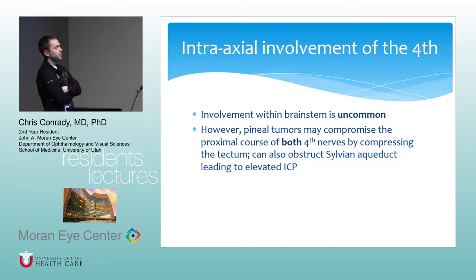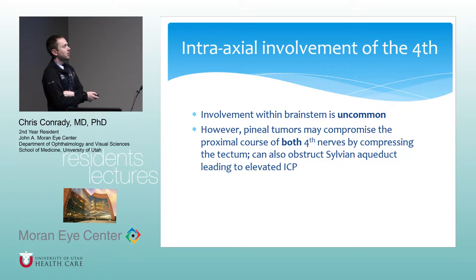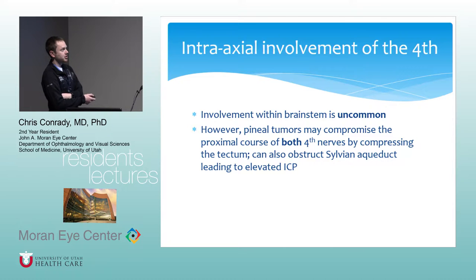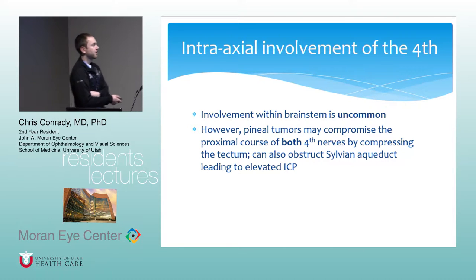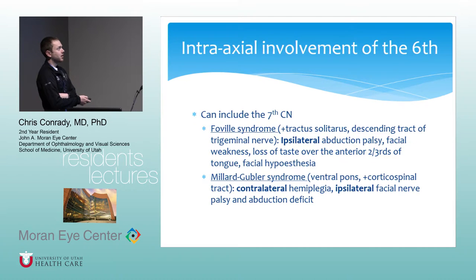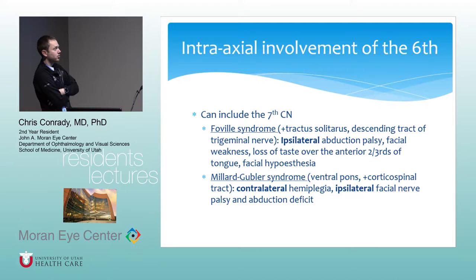Fascicular lesions of the fourth nerve are fairly uncommon and usually due to compression on the tectum, typically from a pineal tumor, which can cause a bilateral fourth fascicular lesion. In that context you can also get obstruction of the sylvian aqueduct, elevated ICP, and other obvious findings associated with elevated ICP. That's actually fairly uncommon overall.